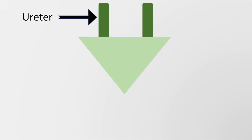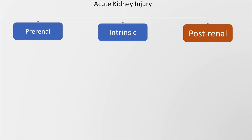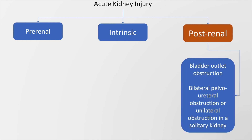This is a schematic diagram of the ureter, the bladder, the prostate, and the urethra. Abnormalities in any of these structures constitute post-renal acute kidney injury, and this may be because of bladder outlet obstruction, bilateral pelviureteral obstruction, or unilateral obstruction in a patient with a single functioning kidney.